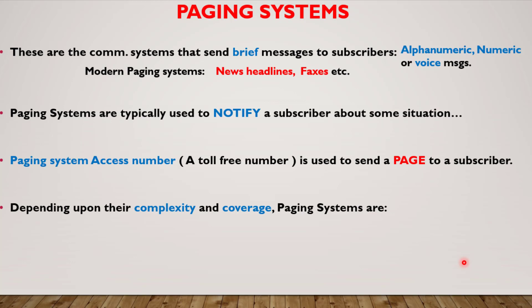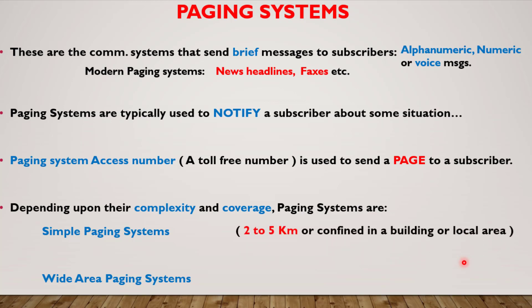Depending on the complexity and coverage capacity of paging systems, they are classified as simple paging systems and wide area paging systems. Simple paging systems have a very limited range of coverage, varying from 2 to 5 kilometers or confined to a particular building or local area. Wide area paging systems behave like a typical cellular system and provide worldwide coverage.